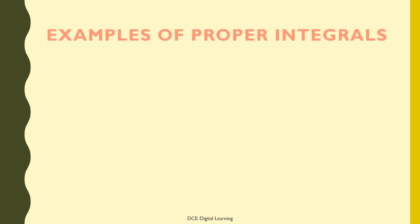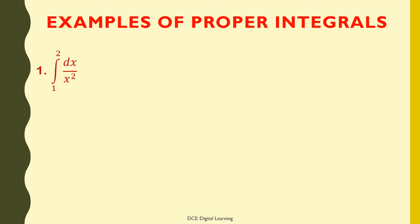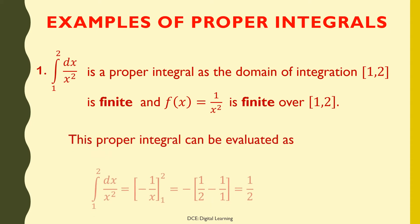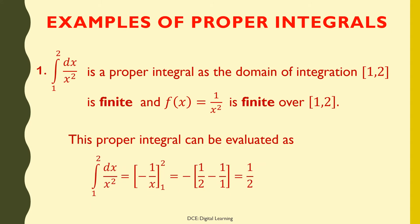Let us look at some examples of proper integrals. First: ∫dx/x² from 1 to 2 is a proper integral, as the domain of integration [1, 2] is finite and f(x) = 1/x² is finite over [1, 2]. This integral evaluates as ∫dx/x² from 1 to 2 = [−1/x] from 1 to 2 = −(1/2) − (−1) = 1/2, a finite value.